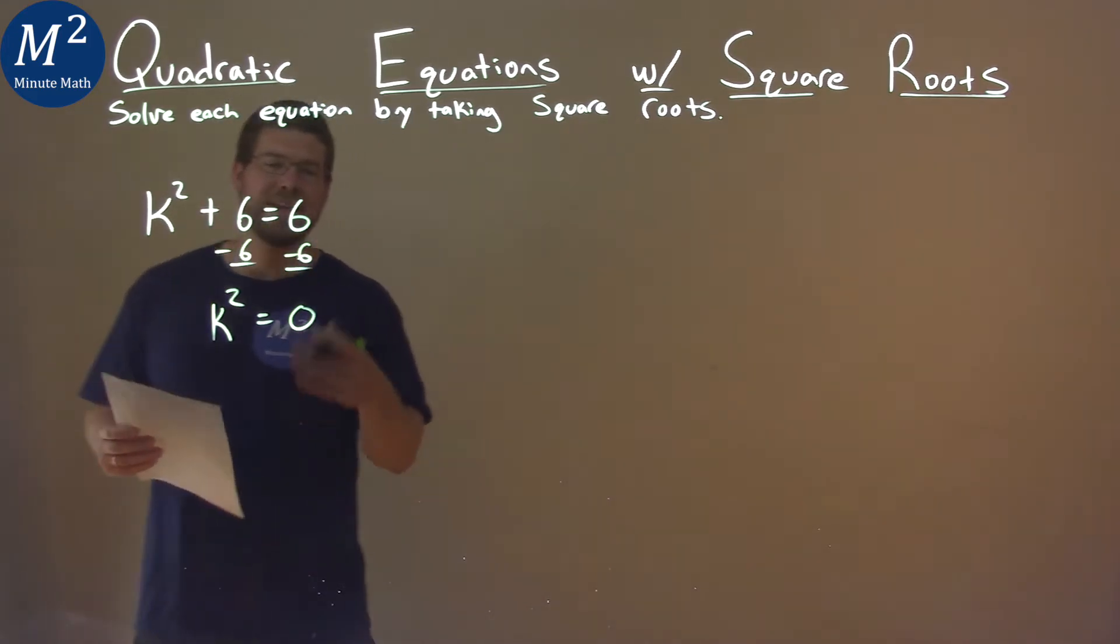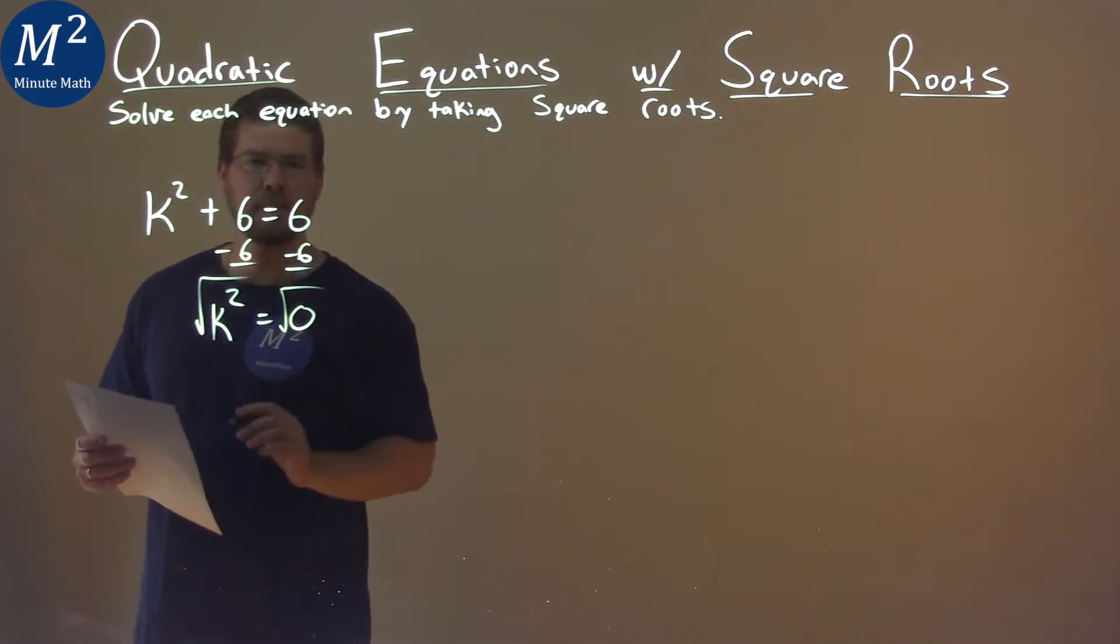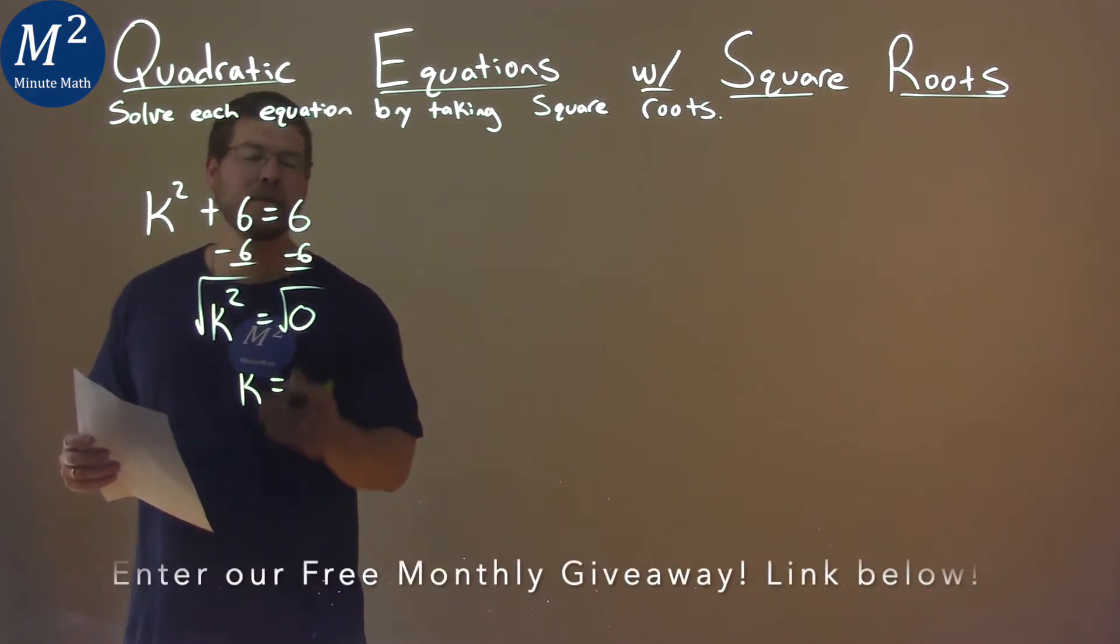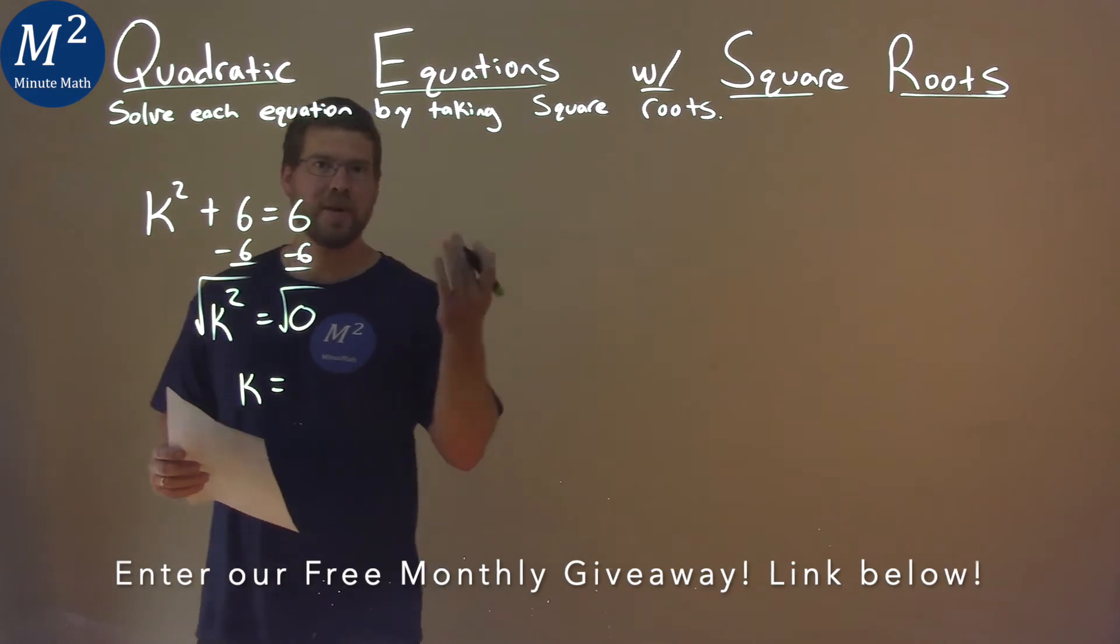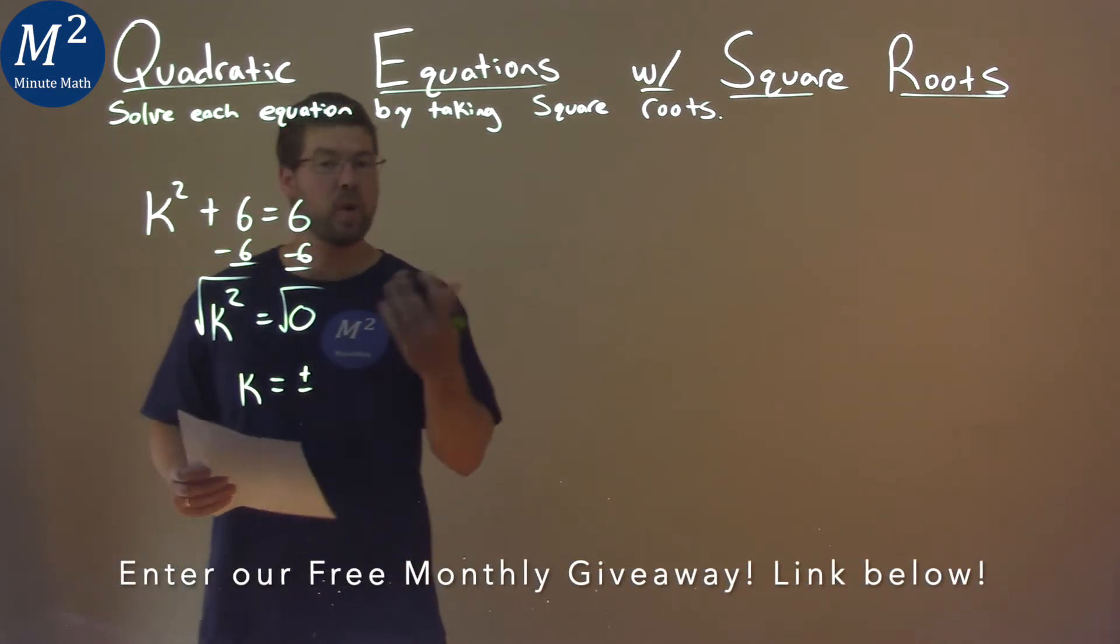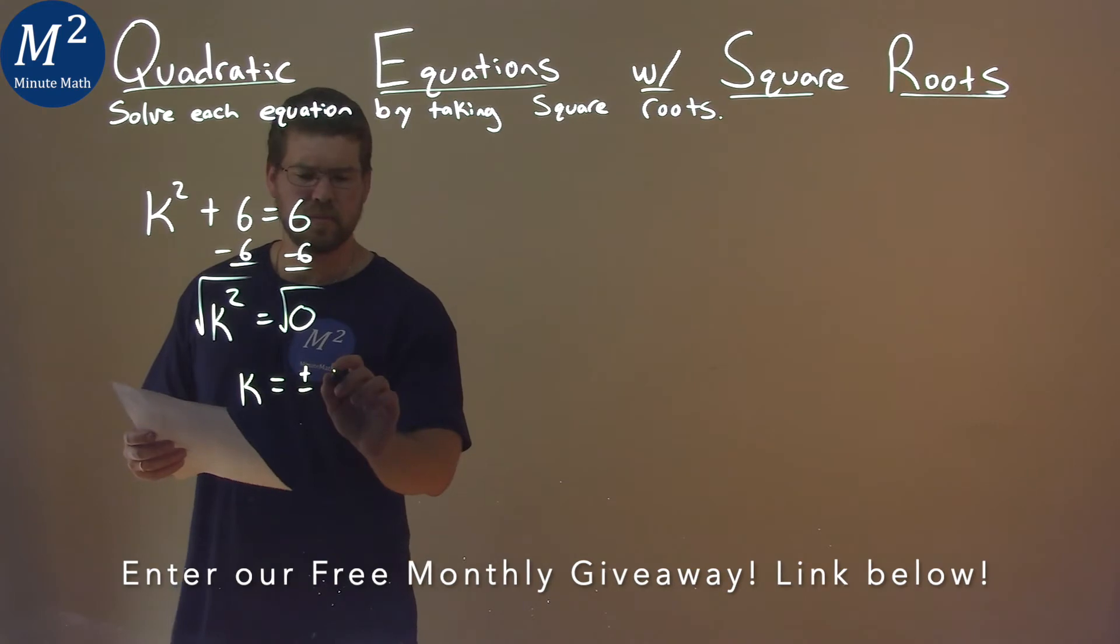Then from there, we need to take the square root of both sides here. K is now by itself equals, and we take a square root over the equal side, we need to put a plus and minus. And the square root of 0 is just 0.